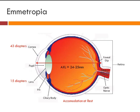What is emmetropia? Emmetropia is a condition in which there is no refractive error present in the eye. There are three factors responsible for emmetropia: the power of the cornea, the power of the lens, and the axial length. The axial length is the distance from the corneal surface to the retina, usually 24 to 25 millimeters. The total power of the eye is almost 59 diopters.